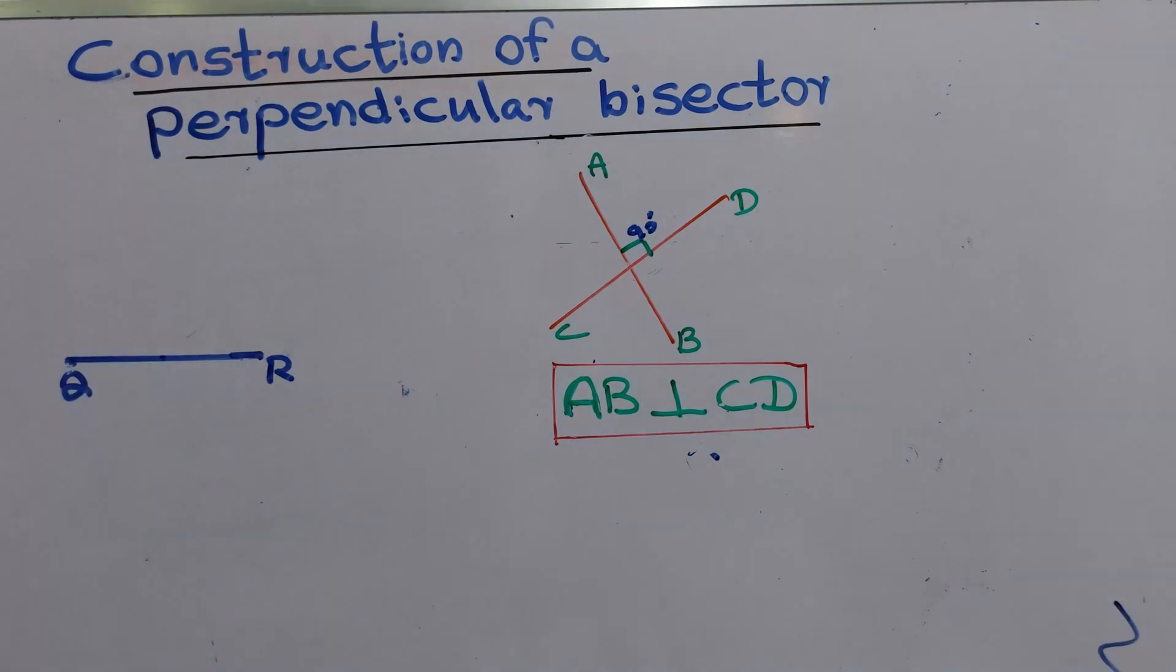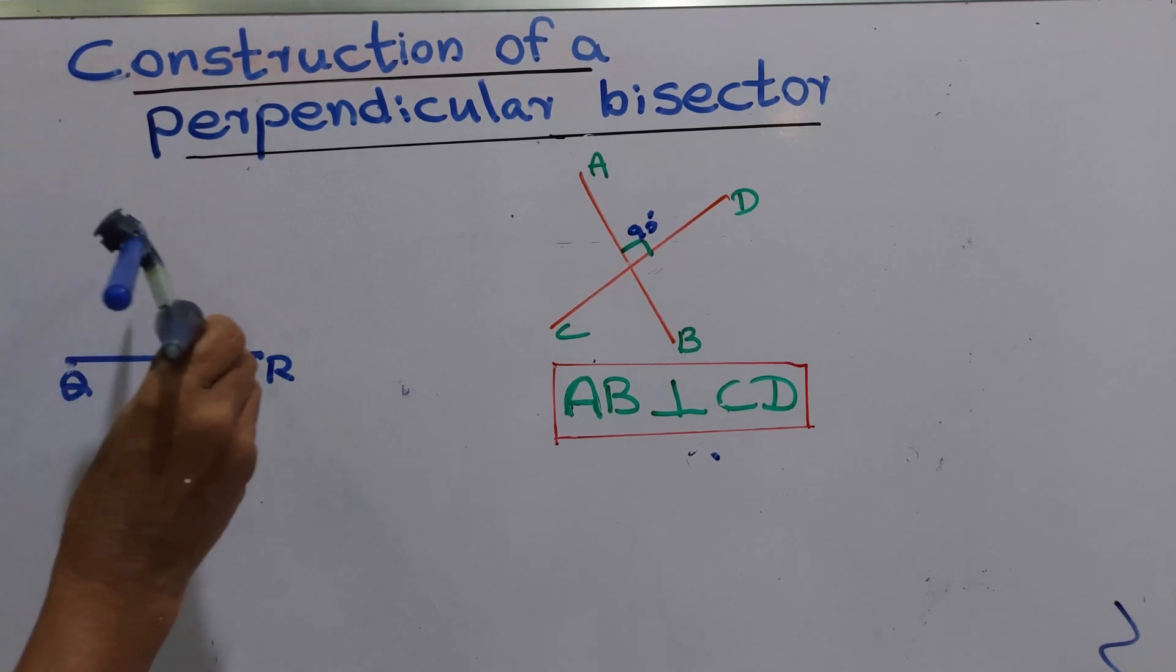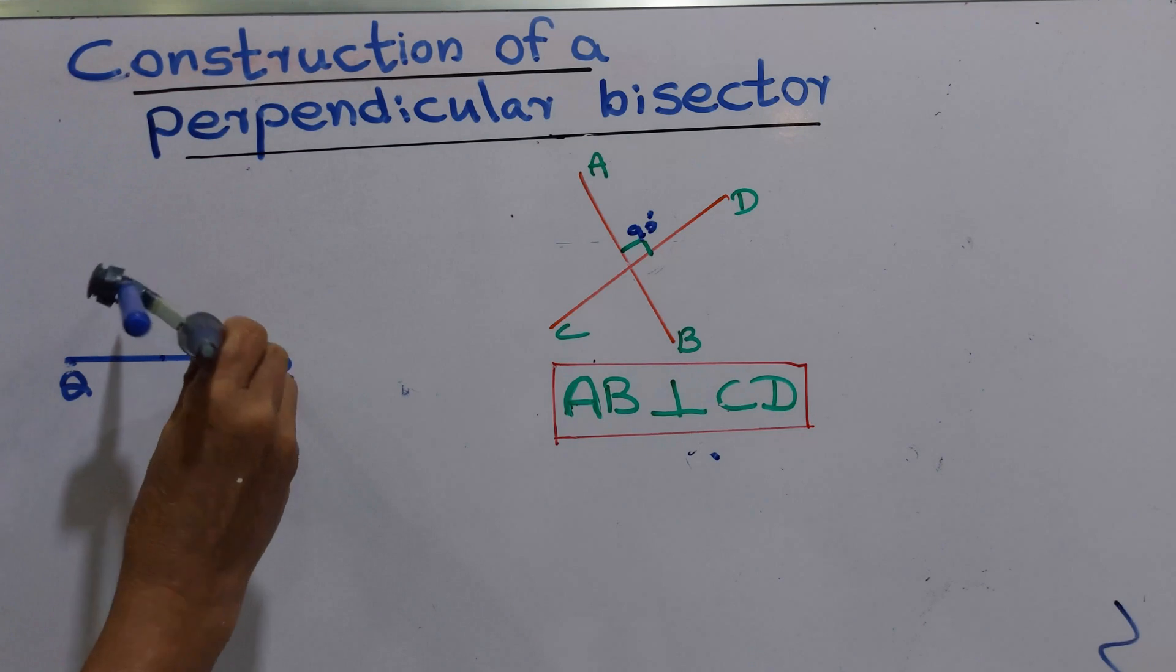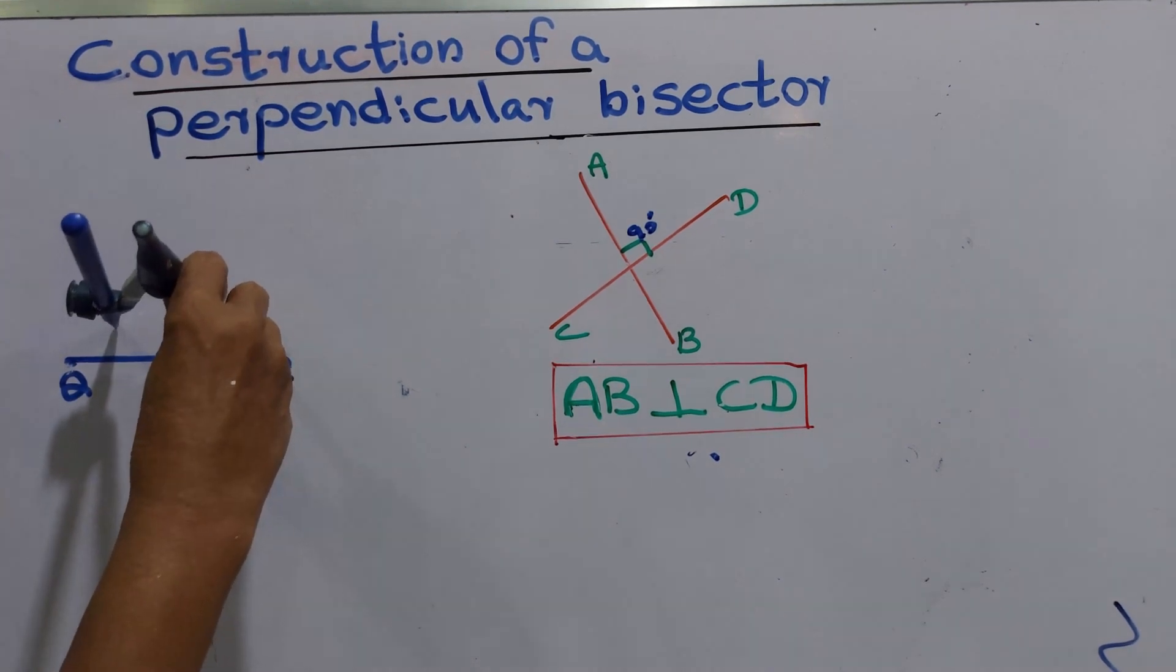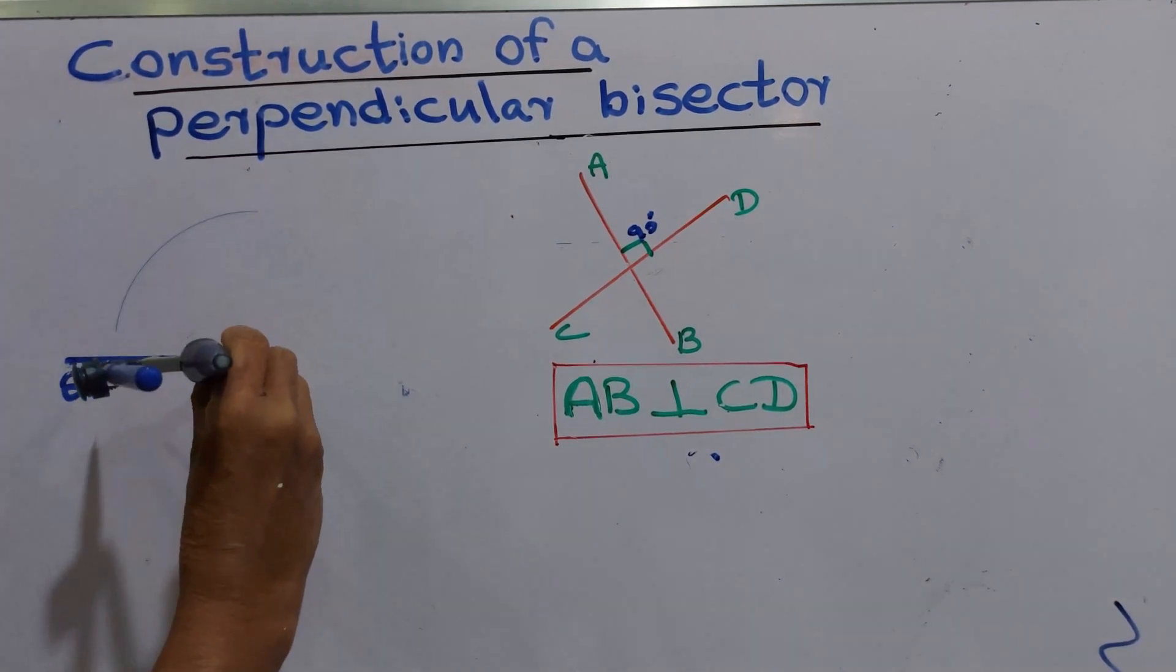Now we are going to construct a perpendicular line. First, draw a straight line like this. We will name it as QR. Then take the compass, keep the compass point here, and draw an arc here and here.